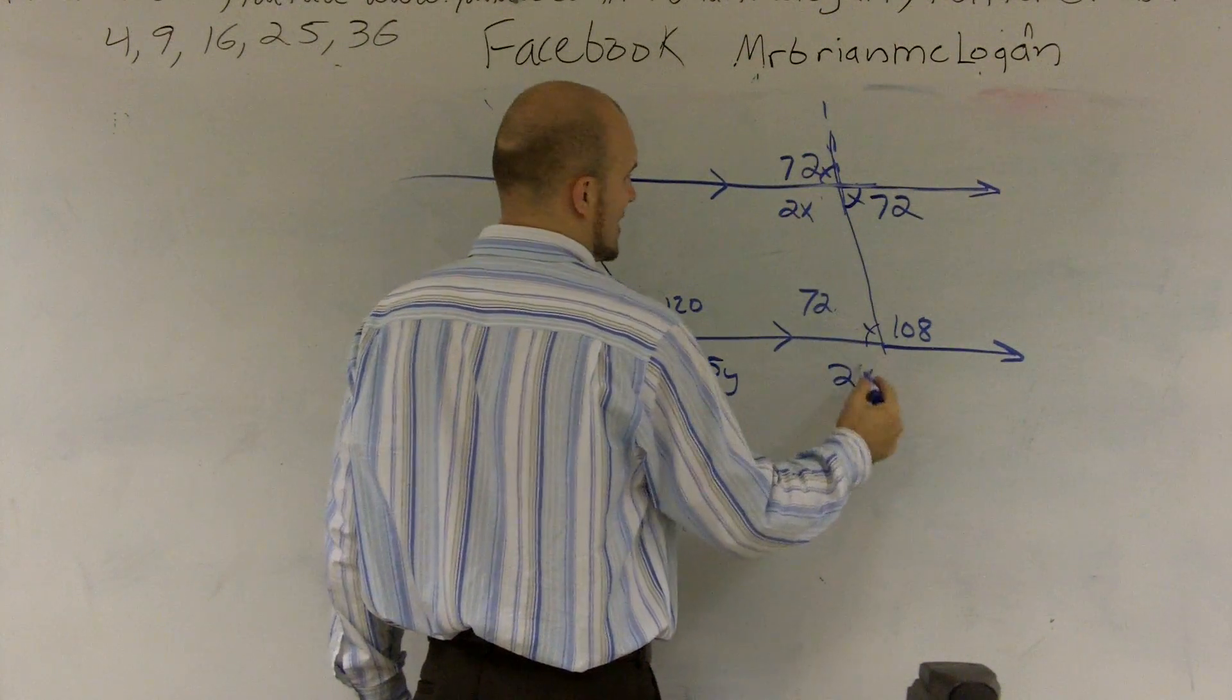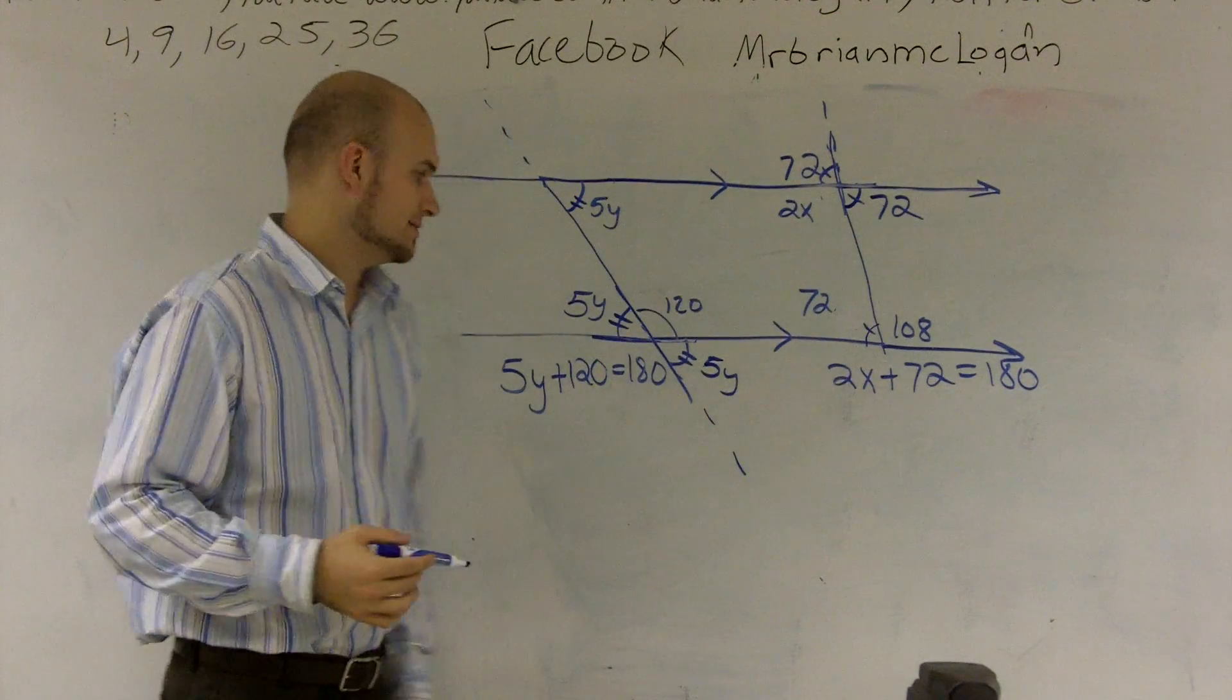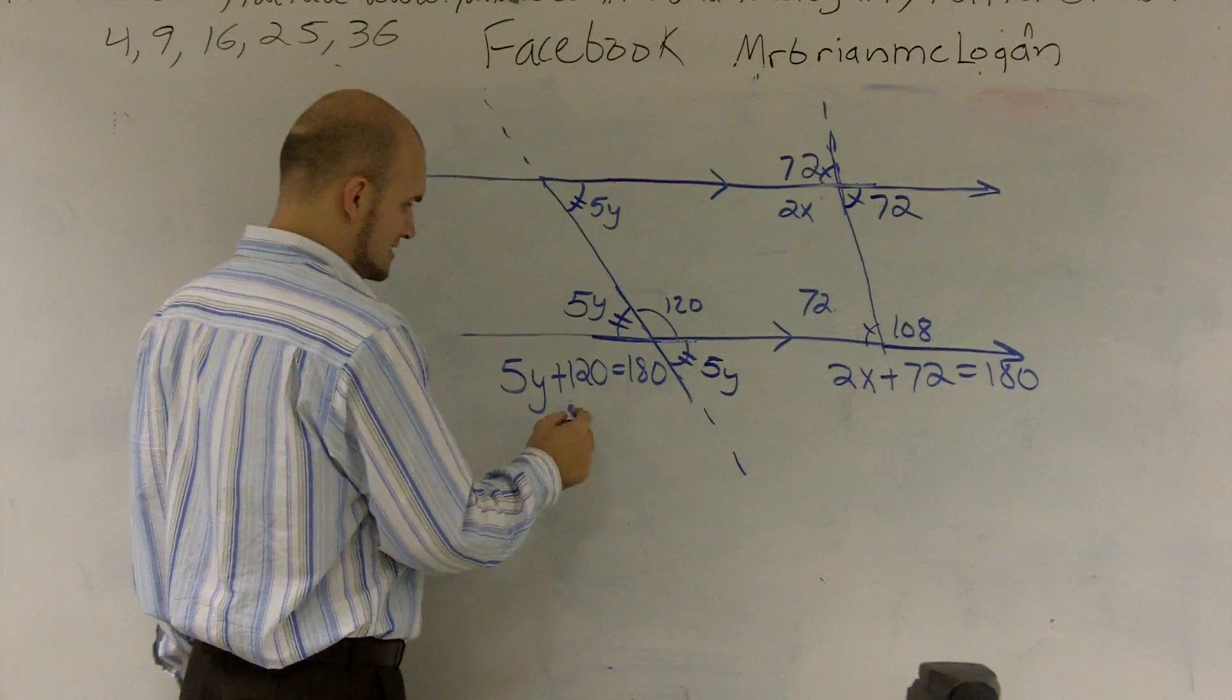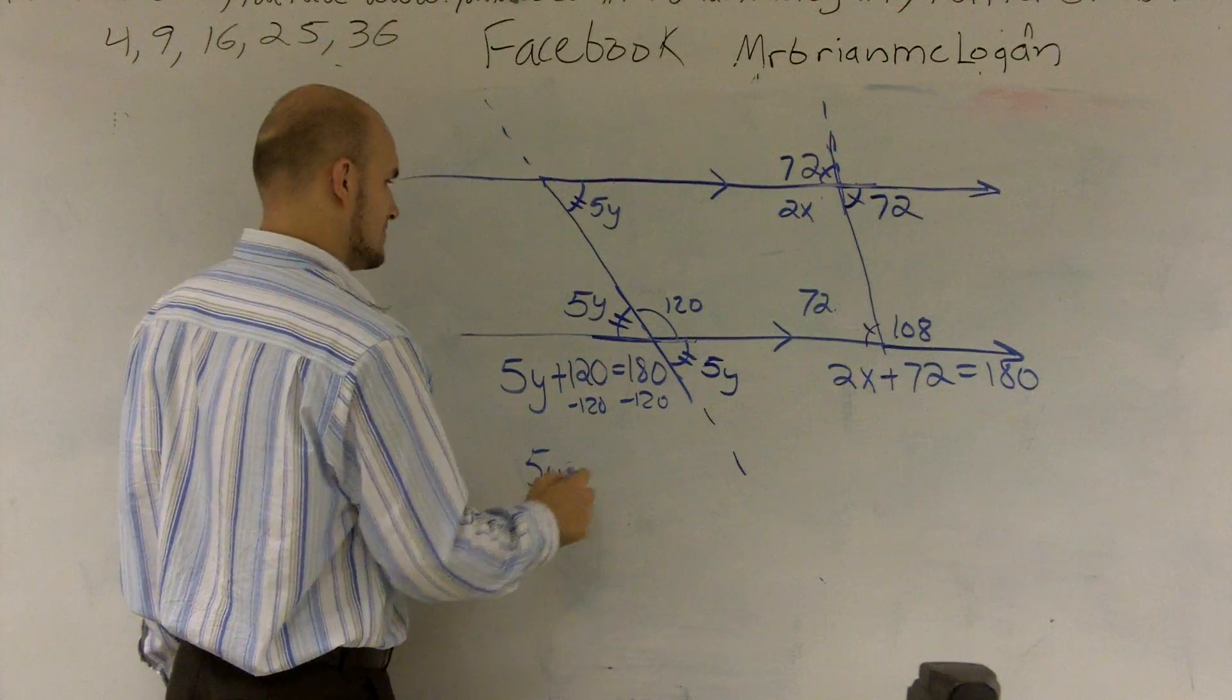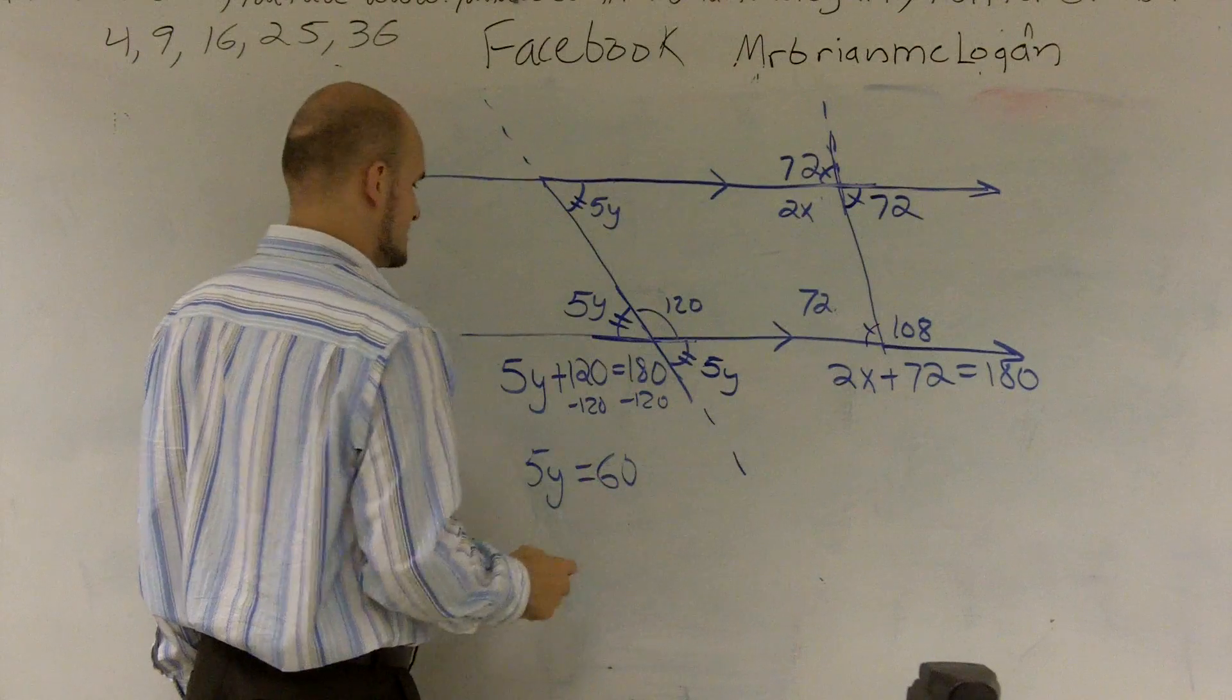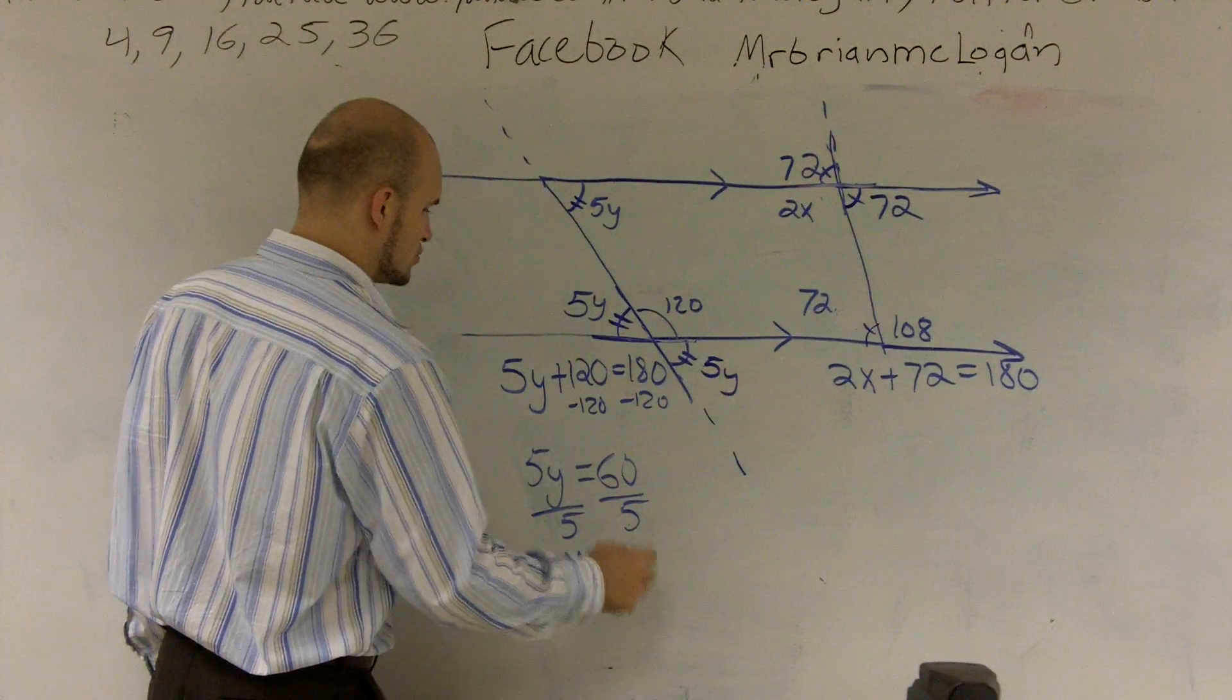So now I subtract 120 and I get 5y is equal to 60. Divide by 5, y equals 12.